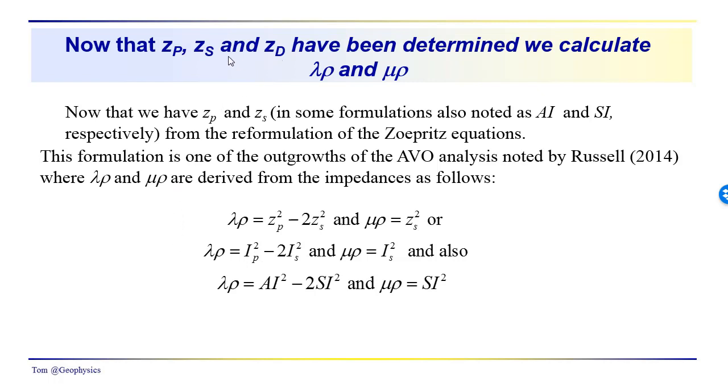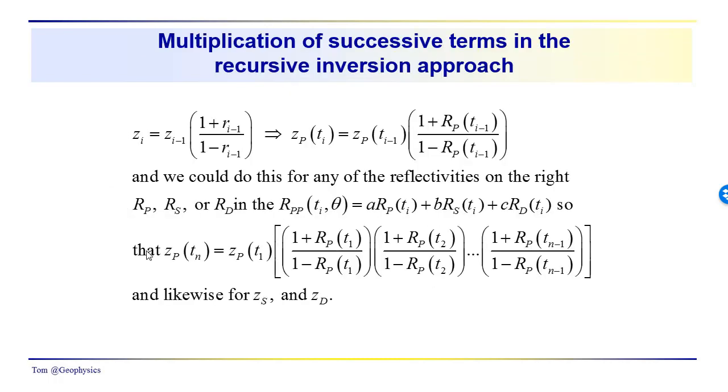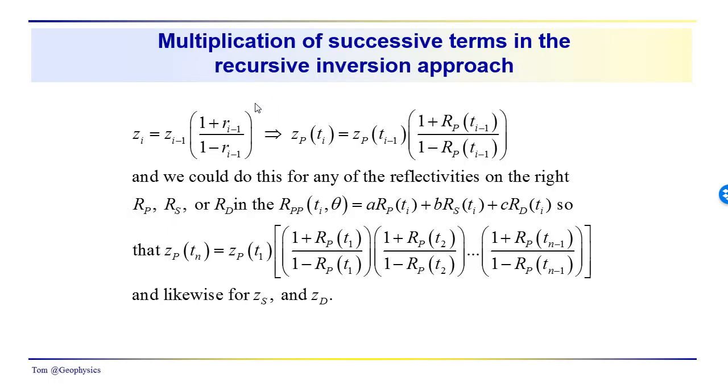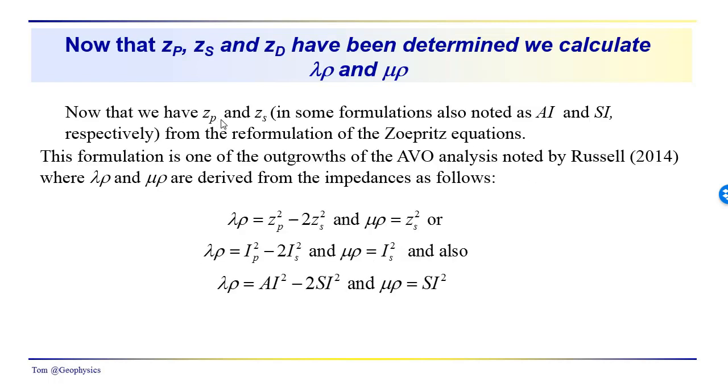Now that we have these impedances, they've been determined through this process that we went through. I thought about presenting a Taylor series approximation to some of this, but it didn't really look too simple, so I've abandoned the idea. But this gives you a sense of how these impedances can be derived, and we've gone through this inversion process, kind of in a two-step inversion process, and we now have these impedances.